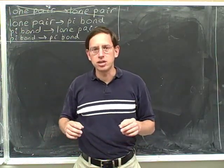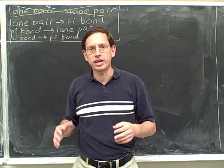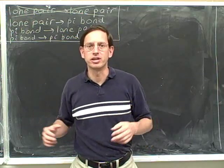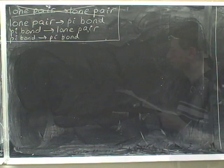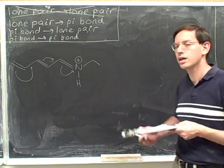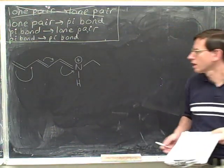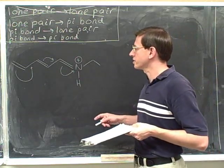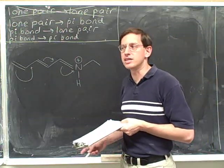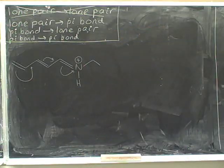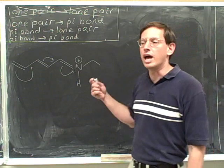All right, so now let's go on. Again, I'm going to continue to give you the electron-pushing arrows, but now I'm going to be giving you multiple arrows. Try this problem. Try to draw the resonance structure that is suggested by the curved arrows that I provide.